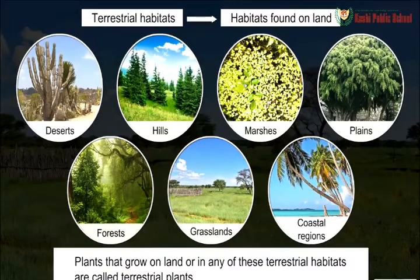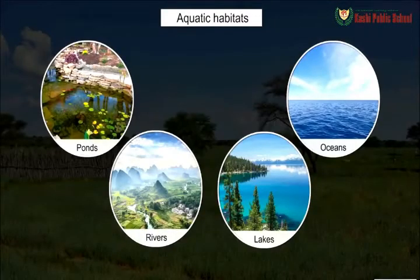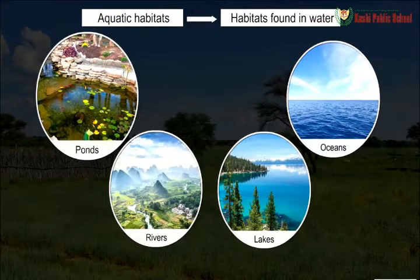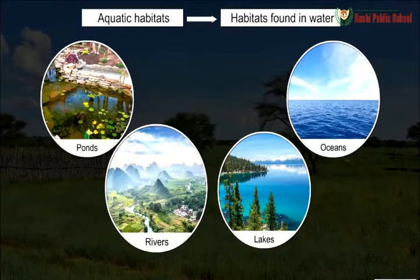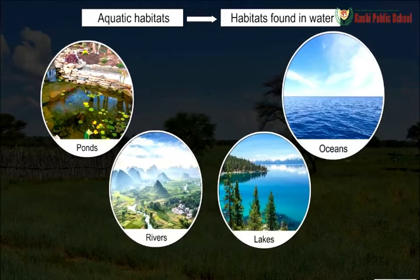Plants that grow on land or in any of these terrestrial habitats are called terrestrial plants. Aquatic habitats, on the other hand, are the habitats found in water. These include ponds, rivers, lakes, and oceans.